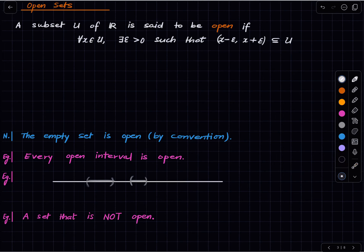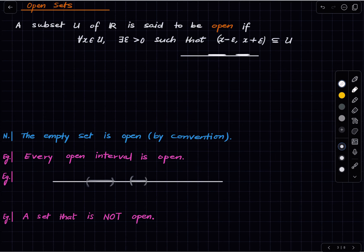An open set will look something like that. If you take a point here then there is a breathing room around it, and for any point there is a breathing room around it. The union of these two shaded regions constitutes an open set.